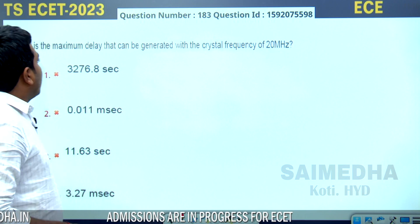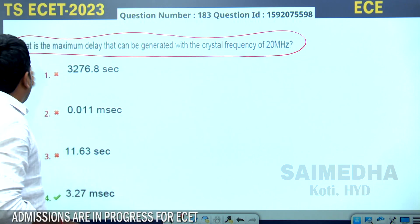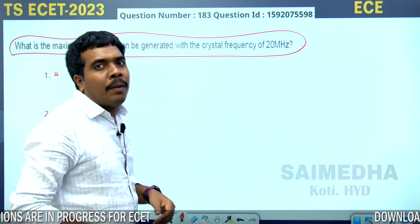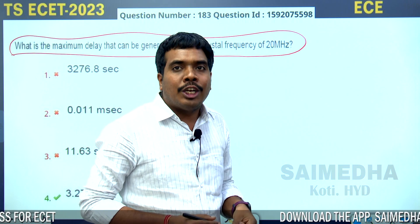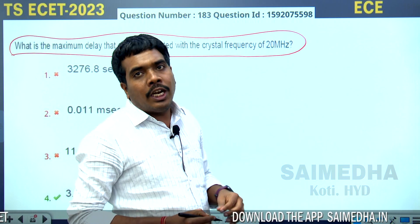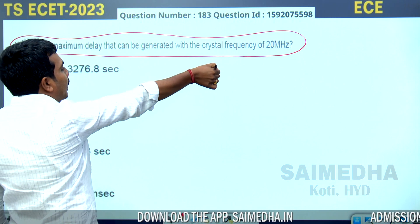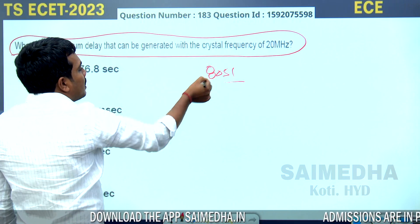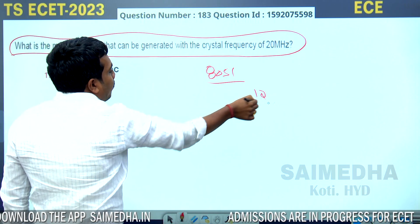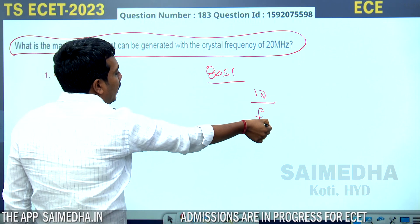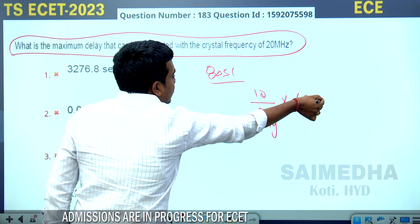What is the maximum delay that can be generated with a crystal frequency of 20 MHz? There is some ambiguity with the question. For the 8051 microcontroller, the maximum time delay is given by the formula: 12 divided by F-crystal, multiplied by 65536.